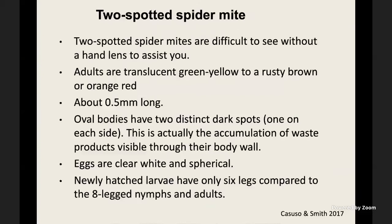Starting with the two-spotted spider mite: they are very small and difficult to see without a hand lens. Adults are translucent greenish-yellow to rusty brown or orange-red in color, about half a millimeter long. The oval bodies have two distinct dark spots on each side, which is a distinguishing feature separating these mites from other groups — this is actually an accumulation of waste products visible through the body wall. Eggs are clear, white, and spherical. Newly hatched larvae have only six legs; as they grow into older nymphs and adults, they develop all four pairs of legs.